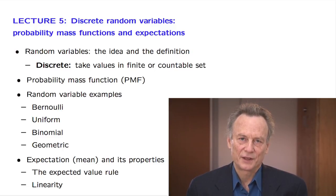After giving a general definition, we will focus exclusively on discrete random variables. These are random variables that take values in finite or countably infinite sets. For example, random variables that take integer values are discrete.